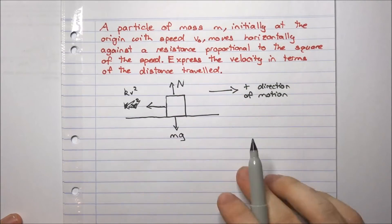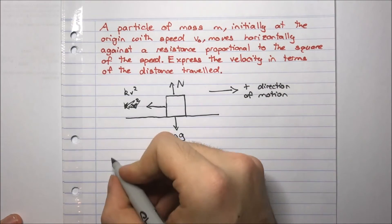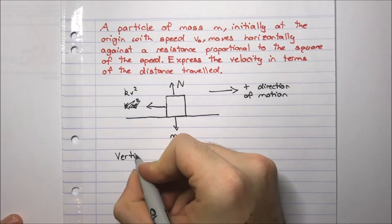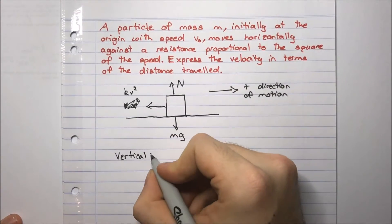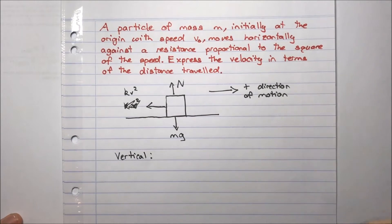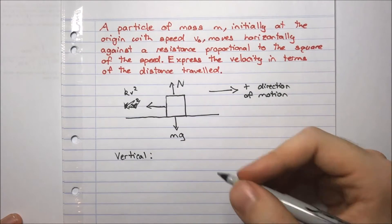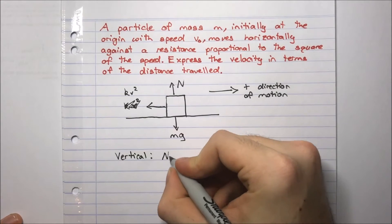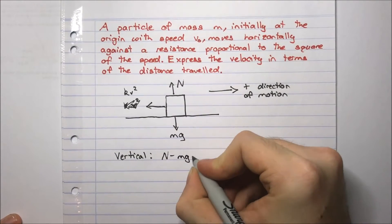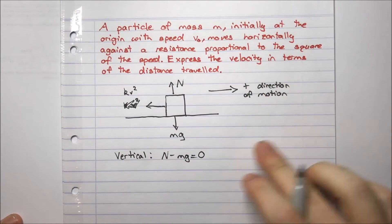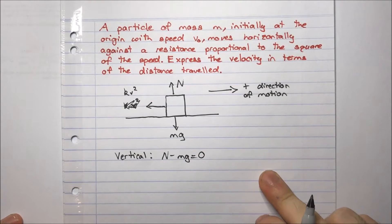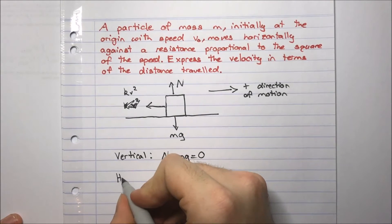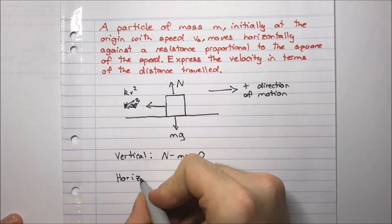Now it's moving horizontally, it's not moving vertically. So in the vertical direction, there's no motion, which means there's no acceleration, which means there's no force. So the sum of the forces should equal zero. So N minus mg equals zero. We probably won't use that again, but let's just put it in there for complete understanding.